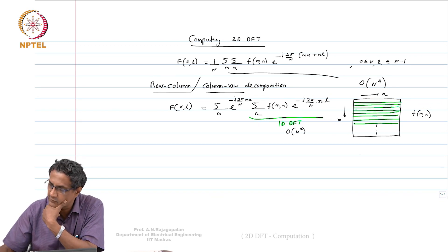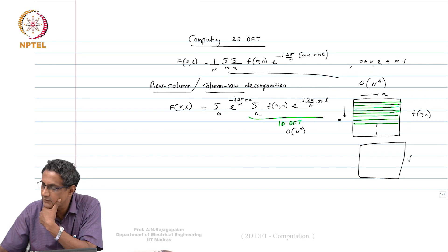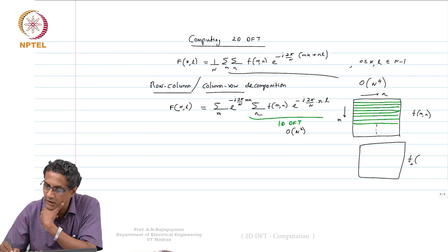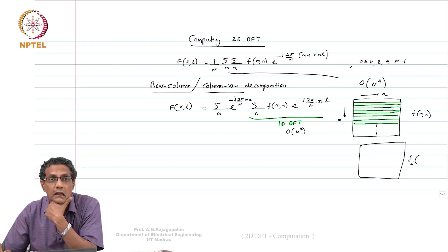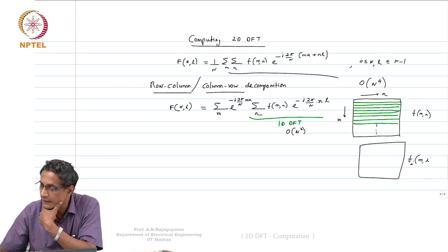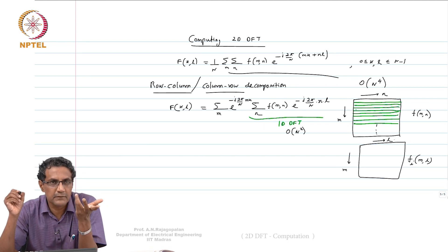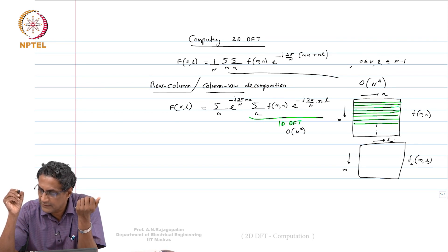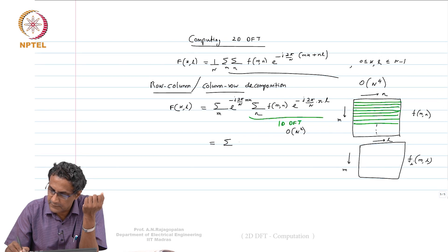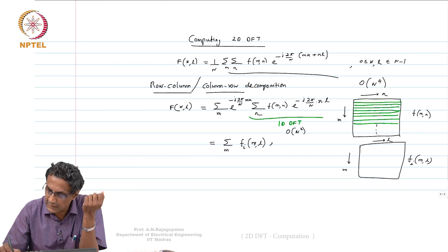So we compute all of this and create a new intermediate array, call it Fi. This Fi is going to be a function of M and L — M this way and L this way. The inner sum, evaluated by summing over N, gives us an intermediate array Fi which is a function of M and L. So we can look upon this as Fi of M comma L times e to the power minus j 2 pi over N times MK.